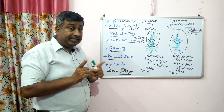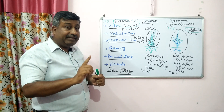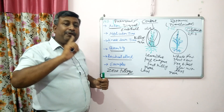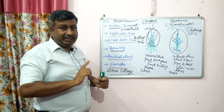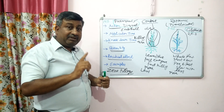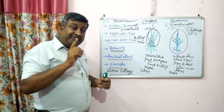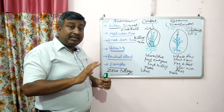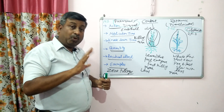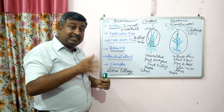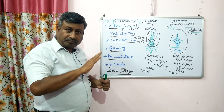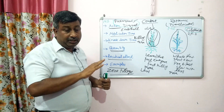There is also a separate category of selective and non-selective herbicides. Selective herbicides kill only the weeds, not the crop. Non-selective herbicides kill both — crop as well as weeds.